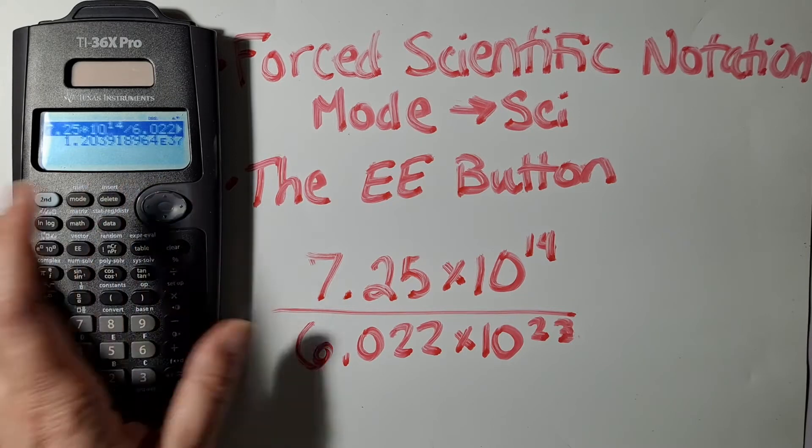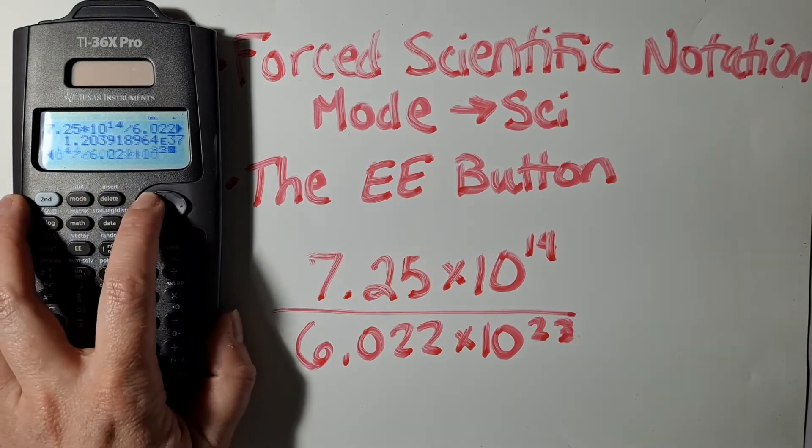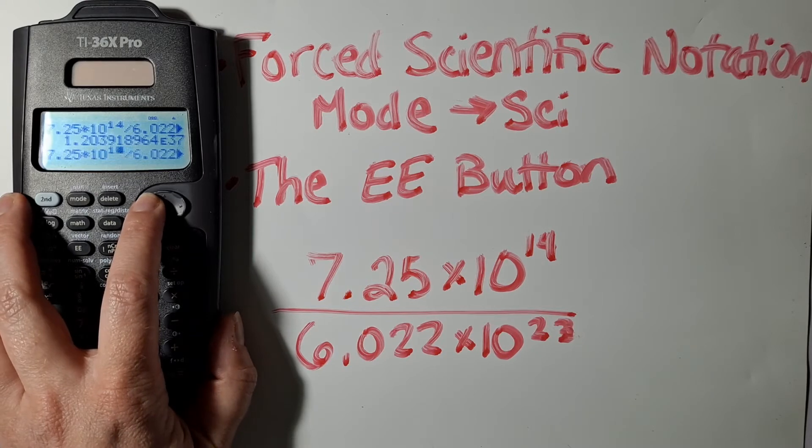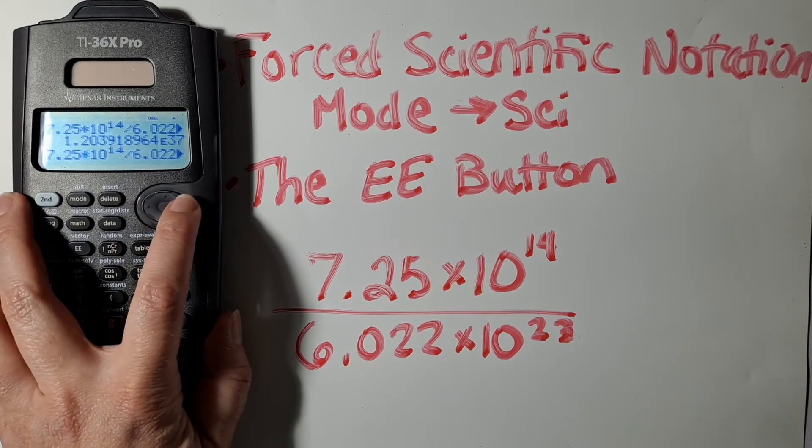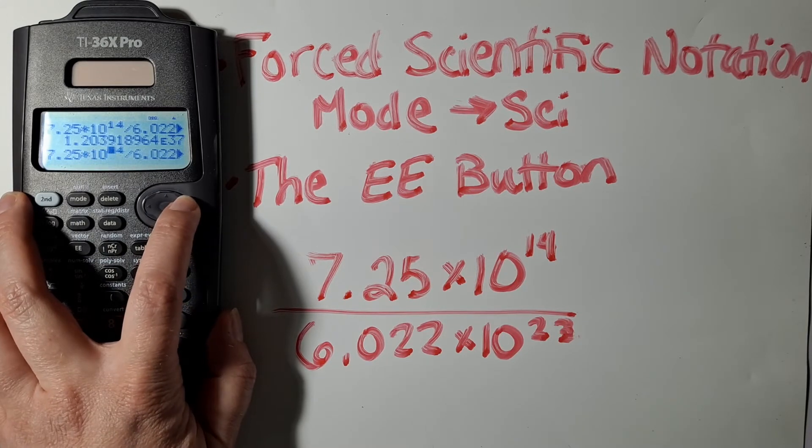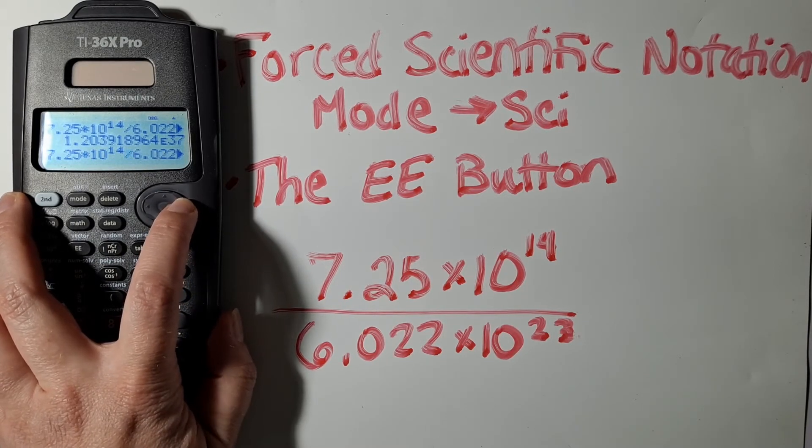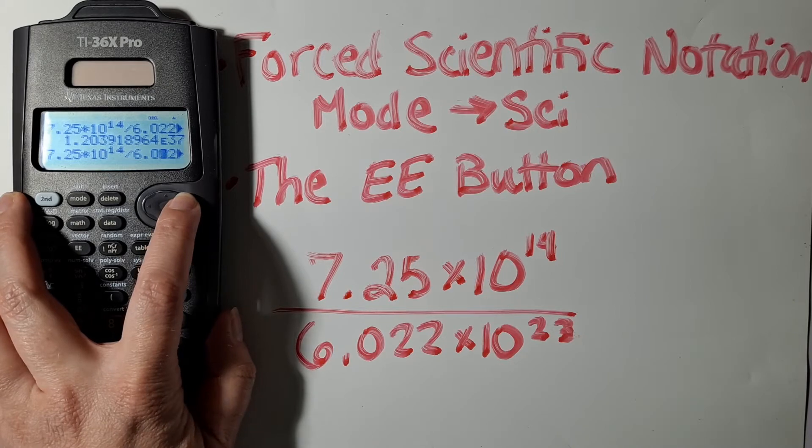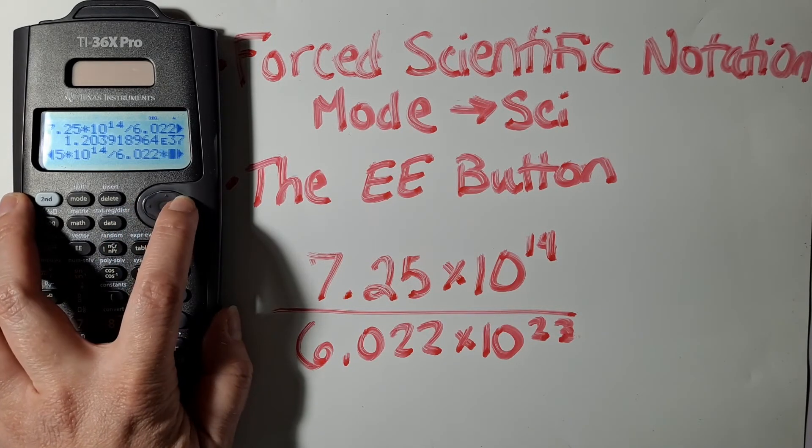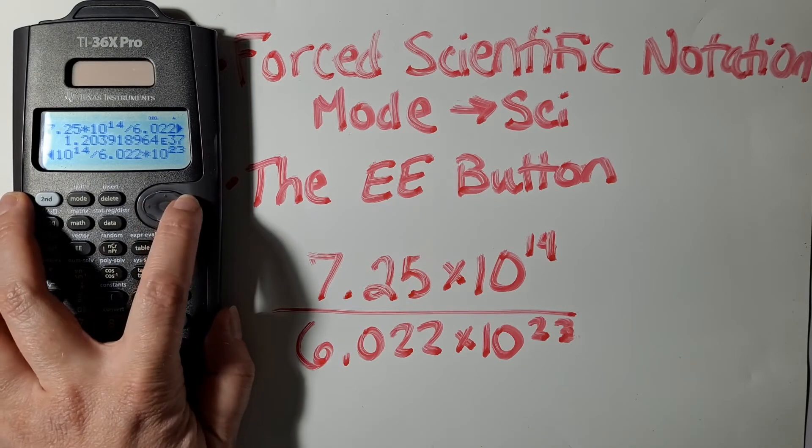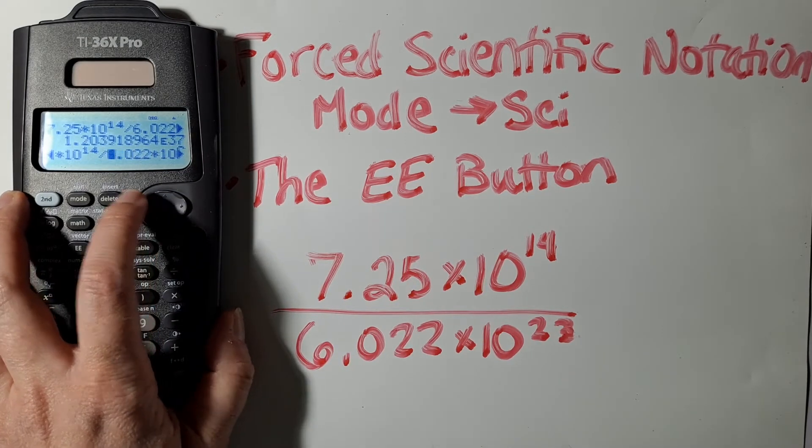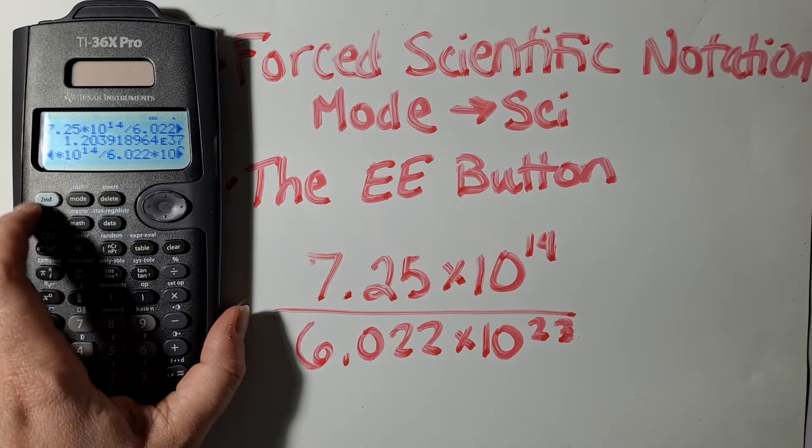Your calculator wasn't able to interpret this correctly because your calculator is very literal about the order of operations. So first, it multiplies the 7.25 times the 10 to the 14th. Then it takes that result and divides that by 6.022. And then it multiplies whatever that result was by 10 to the 23rd. Your calculator didn't know that the 6.022 times 10 to the 23rd was together in the denominator.